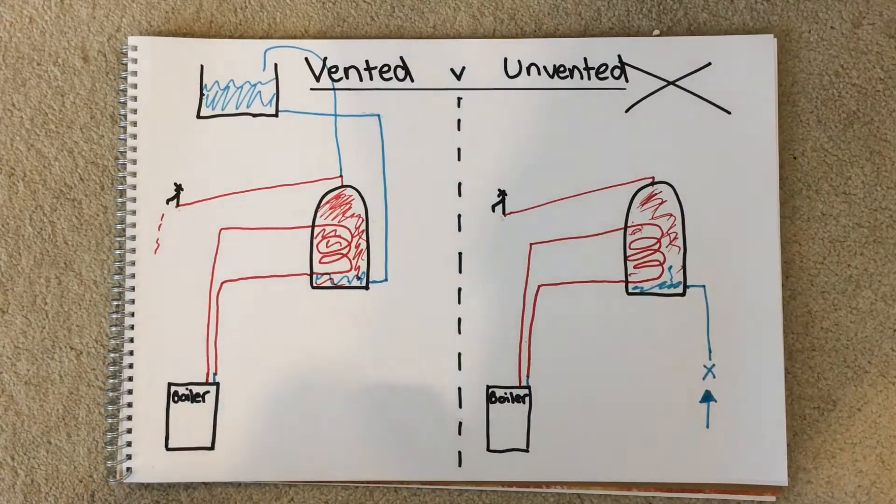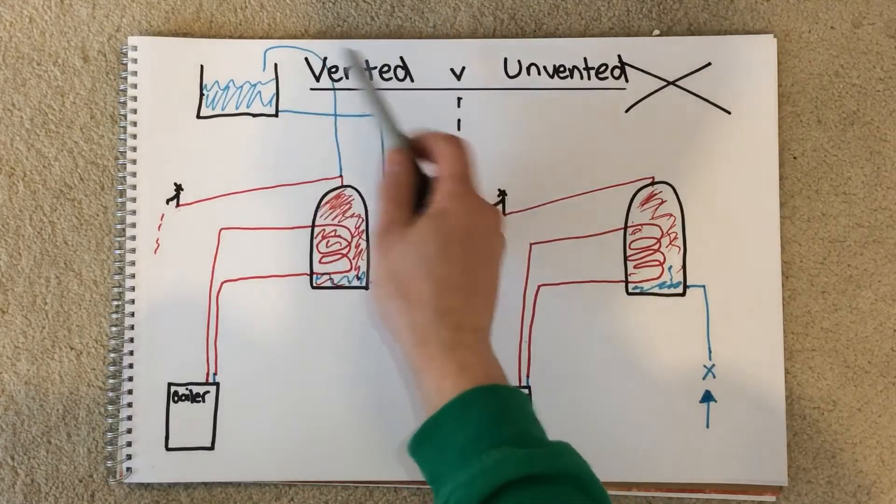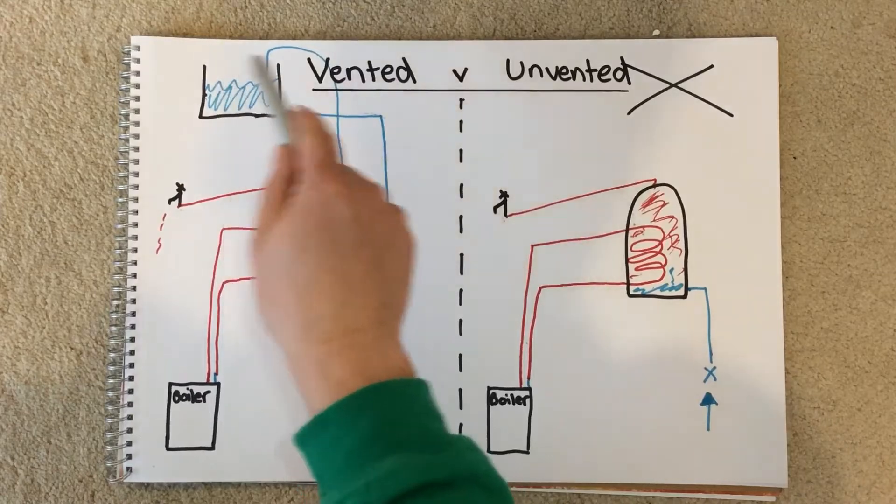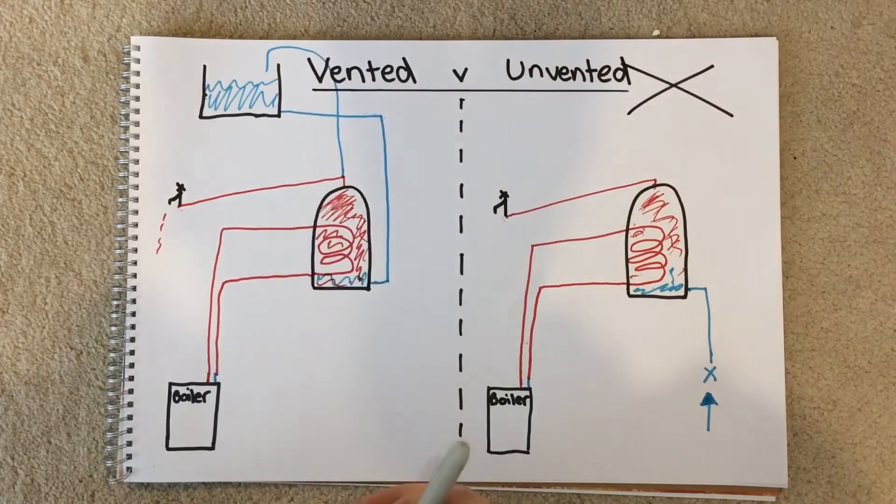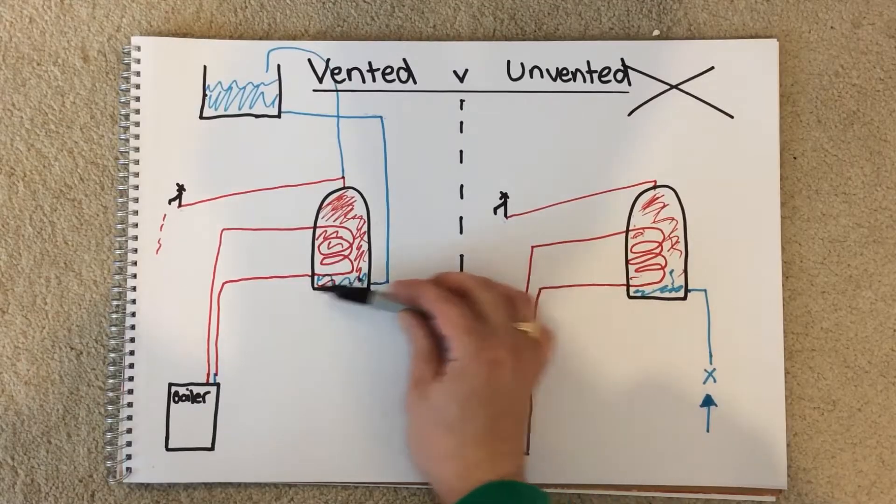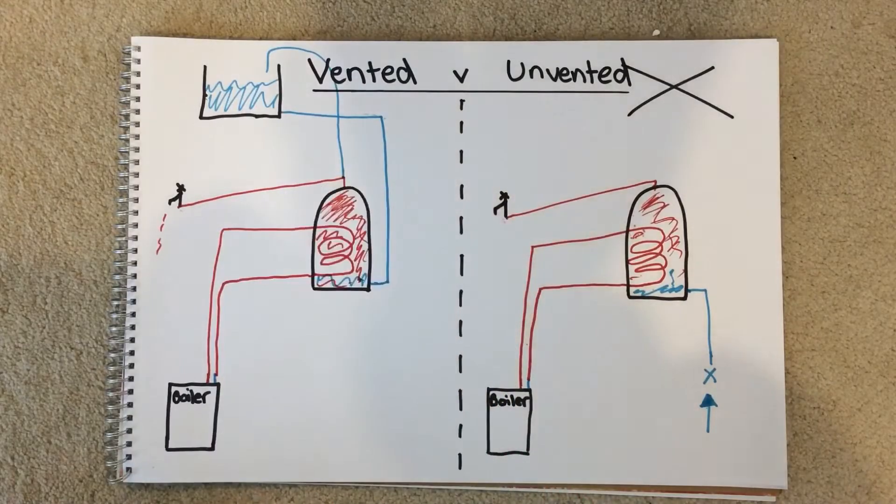But the main difference is where your vented, more conventional hot water cylinder, will be fed via this tank in your loft. So you'll see a large tank in your loft, and what that does is it feeds cold water down into your cylinder. It starts off cold obviously, and then comes up heated into your tap.